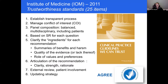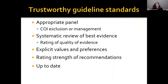The Institute of Medicine suggested 25 items for trustworthy guidelines. I'm going to present my ideas of what makes a trustworthy guideline — consistent with the Institute of Medicine, but a more succinct presentation of what I think are the crucial items: an appropriate panel, systematic review of the best evidence, explicit statement of values and preferences, rating the strength of recommendations, and making sure that your evidence summary and recommendations are up to date.